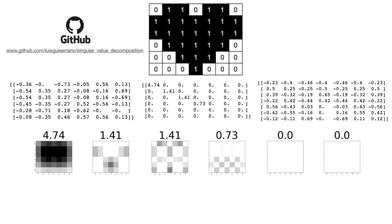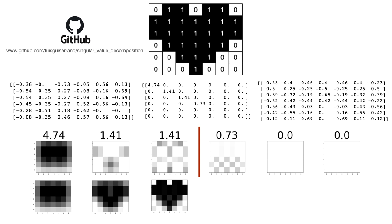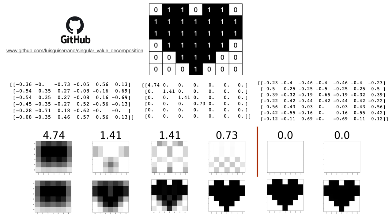Now all we have to do is add components starting from the first. Adding just the first gives a blurry image. Adding the first two gives a slightly sharper image. Adding three gives something a little sharper still. Adding four gives a perfect heart — and we can stop there because the remaining components have singular value zero. This all means the heart matrix has rank four. We can always decide how far to go: if storage is limited, we use the first or second image; if we have more, we use more components. Singular value decomposition lets us choose how sharp we want our image — the sharper, the more storage needed.